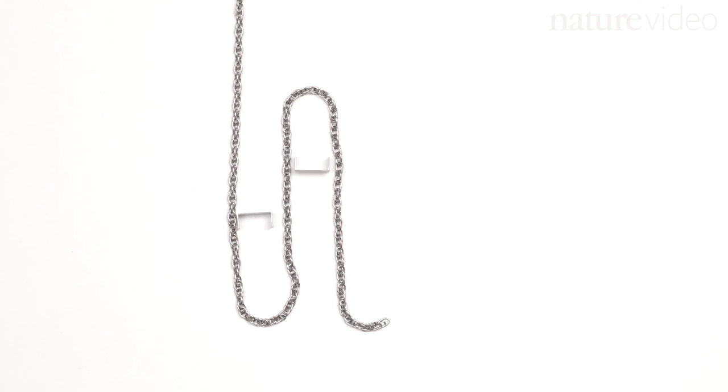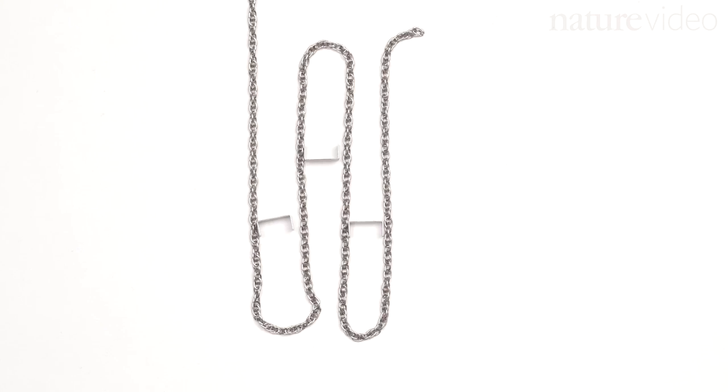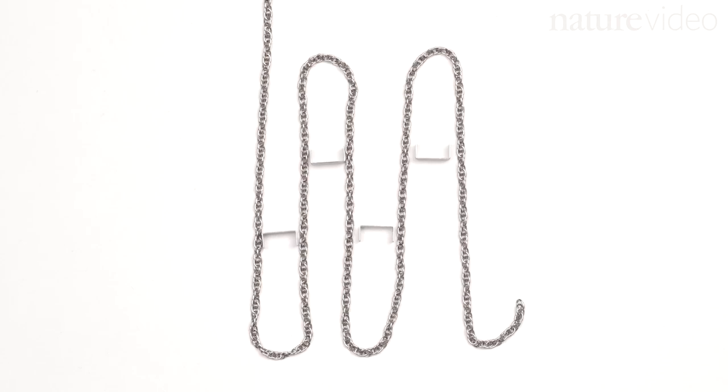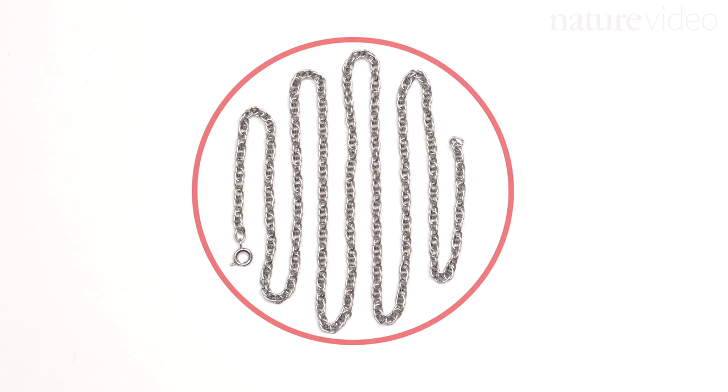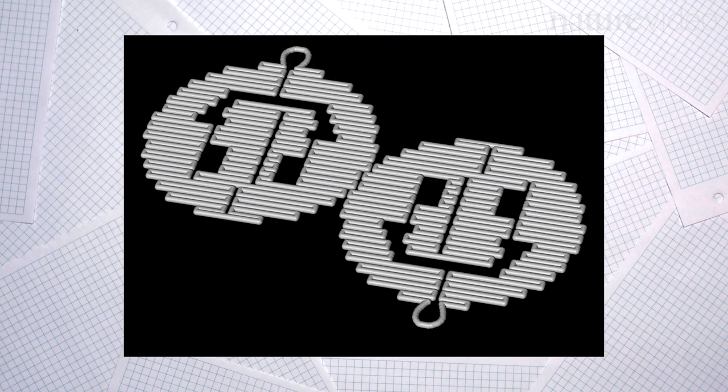You start with a long piece of single strand DNA and you fold it just like origami, except you have to fix it in place with another tiny piece of DNA called a staple strand. And then you fold it again and again and again until you've made a shape, whether it's a square or a circle or a smiley face.